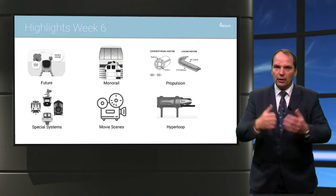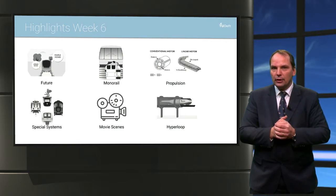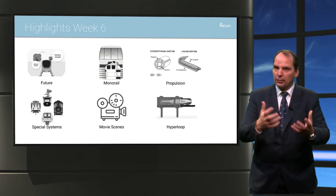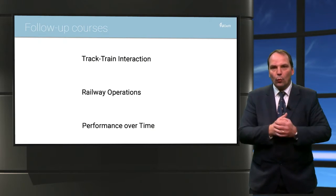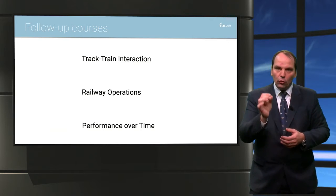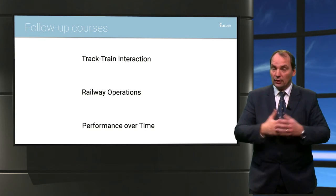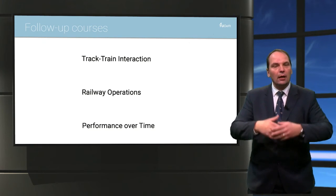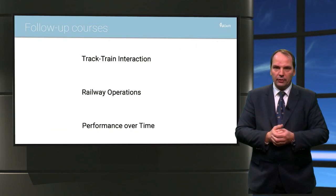An example is the Hyperloop — I think it is well known that TU Delft has also developed a Hyperloop system. And when you look in movie scenes, you have all kinds of possibilities and future lookalikes of trains. That is also a question for you — maybe you can also search for scenes in movies for us. Looking ahead, if you like this online education, there are three modules worked out in detail to learn more about railway business online: about train interaction, about railway operations, and about performance over time. These three modules are coming, so please be aware of this and be there.